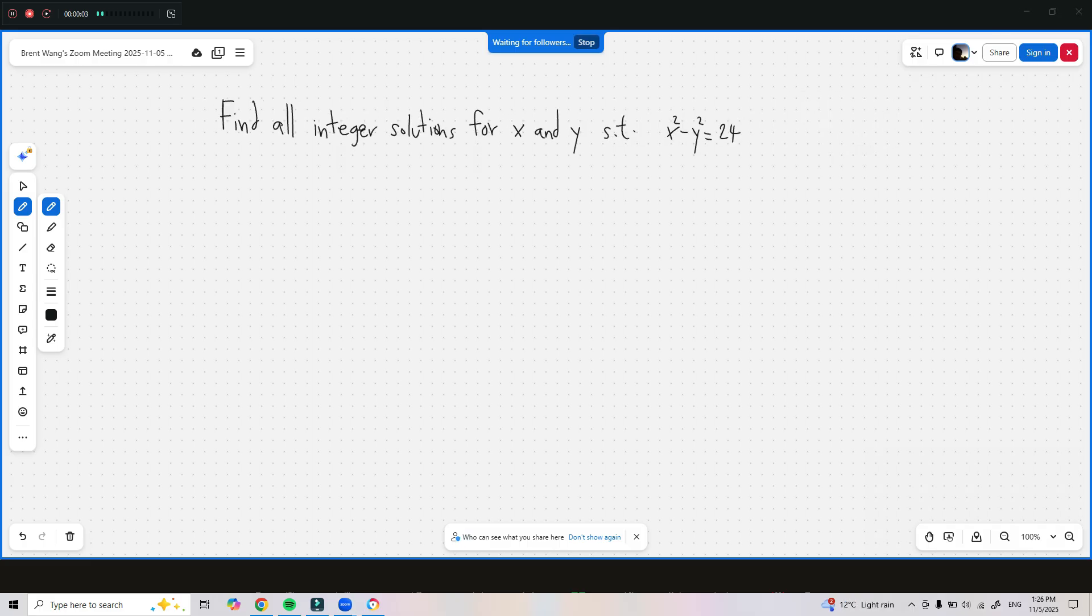So let's suppose we were asked to find all the integer solutions for x and y such that x squared minus y squared is equal to 24. Well, here's what we know 24 could equal to. 24 could equal 1 times 24, which would give you 24. It could equal 2 times 12, which is 24. It could equal 3 times 8, which is 24. And it could equal 4 times 6, which is 24.